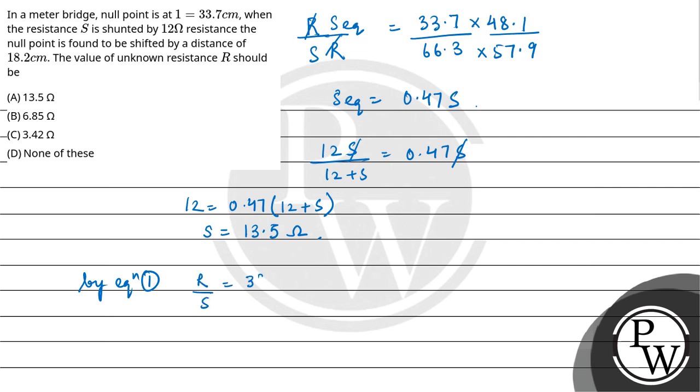Now by equation 1, R by S equals 33.7 upon 66.3, so R equals 33.7 upon 66.3 into 13.5. This comes to 6.86 ohm.